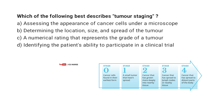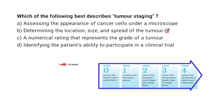Correct answer: B. Determining the location, size and spread of the tumor. Tumor staging is used to assess the extent of cancer in the body, which helps in planning treatment and predicting outcomes.